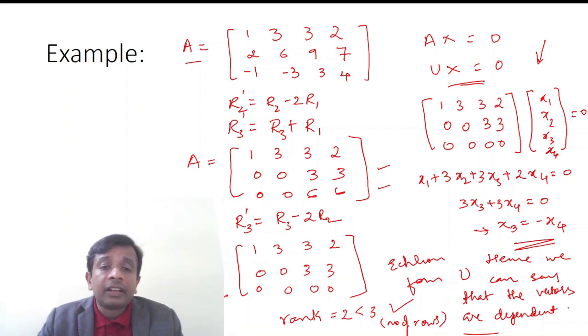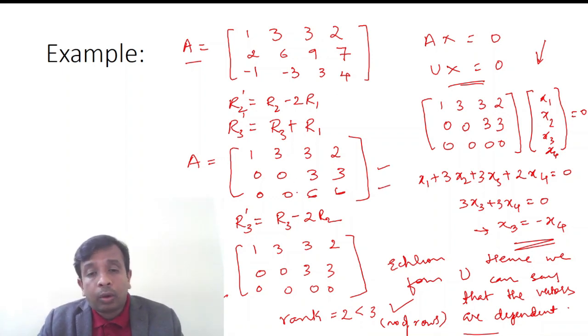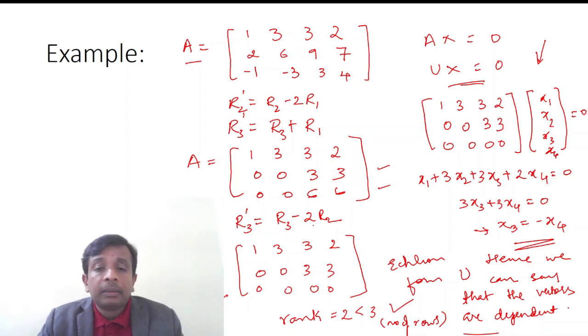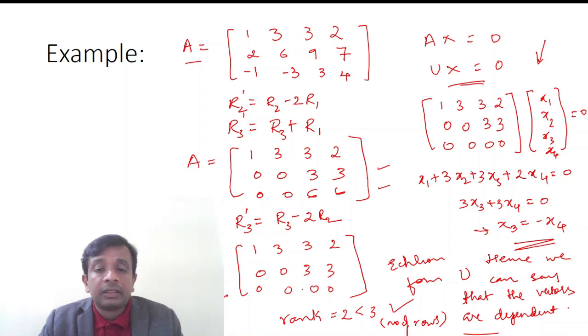Continuing with further row operations, R3' = R3 - 2*R2 gives the matrix 1 3 3 2 / 0 0 3 3 / 0 0 0 0.